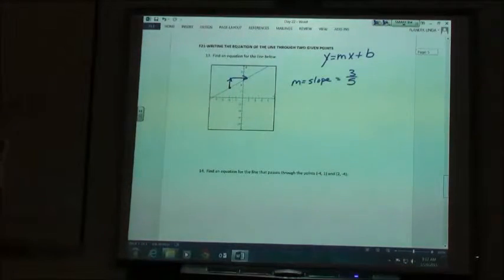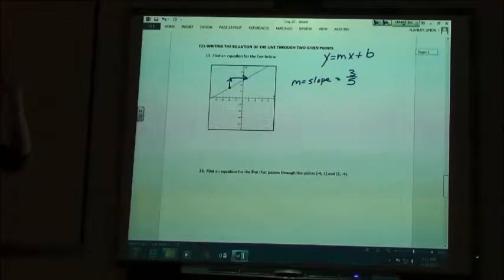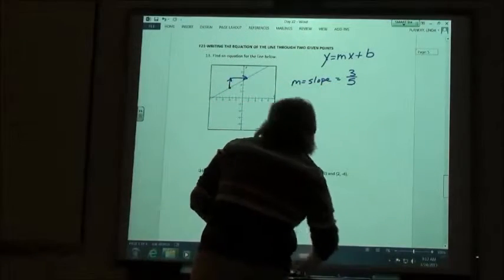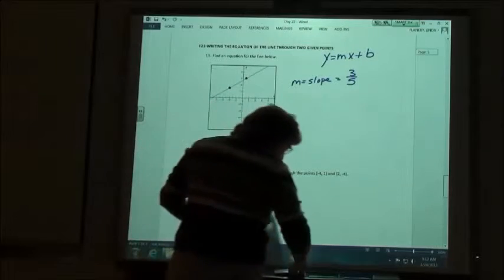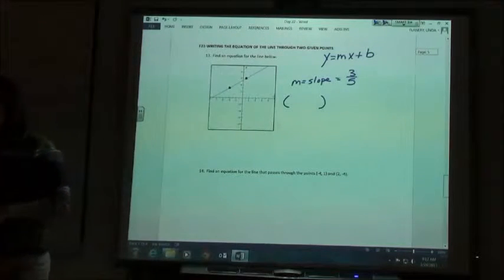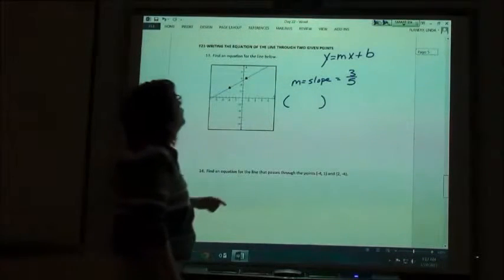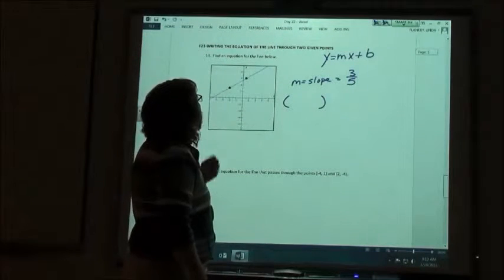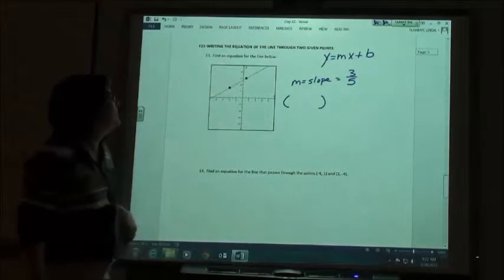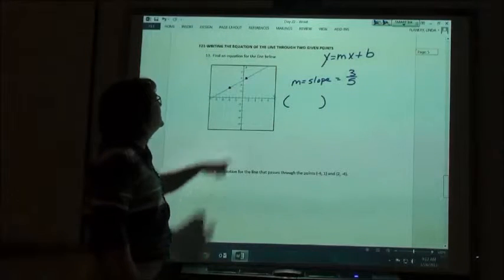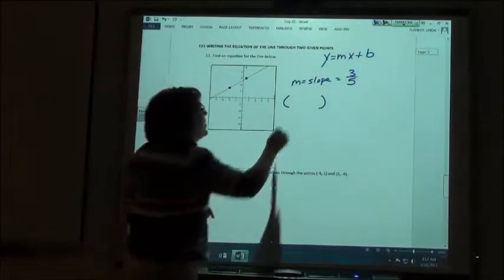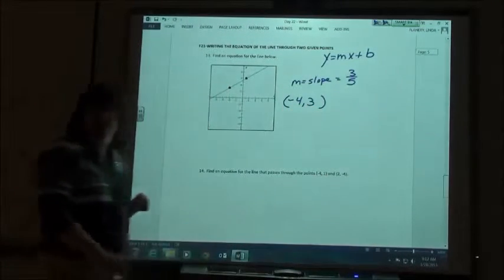So what we're going to do is like we had on the other one where we use the point and the slope to find the equation of the line. We know the slope is 3 fifths. We're going to pick one of these two points. It doesn't matter which one you're going to use. So the coordinates of one of those two points, which one do you want to use? Let's use the one to the left. This is at negative 4, 3. So negative 4, 3 is the ordered pair that goes with that point.